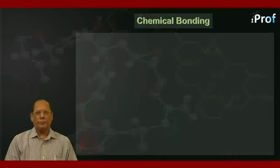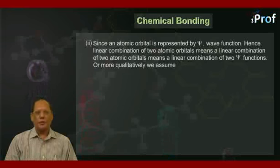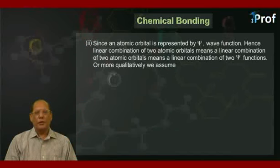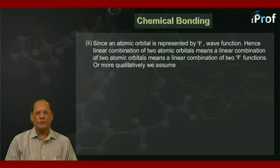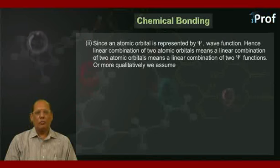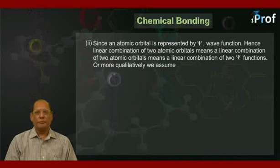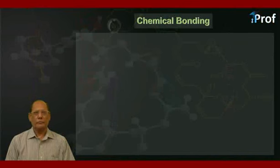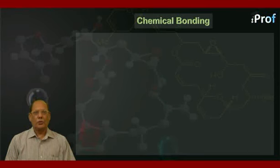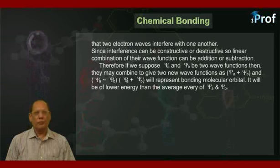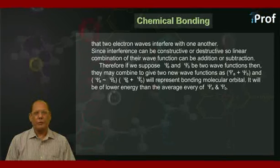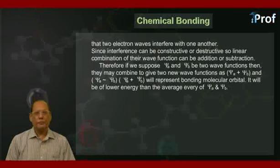The second point is, since an atomic orbital is represented by psi, the wave function, hence, linear combination of two atomic orbitals means a linear combination of two psi functions. Or more qualitatively, we assume that two electron waves interfere with one another, since interference can be constructive or destructive.